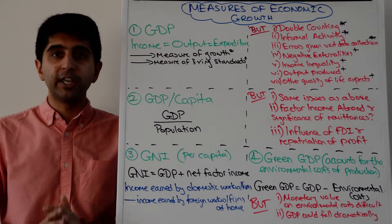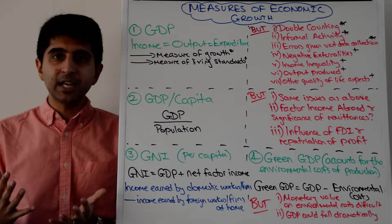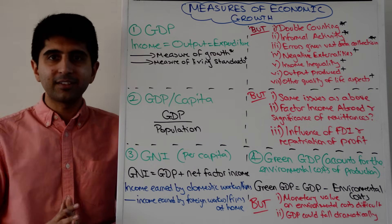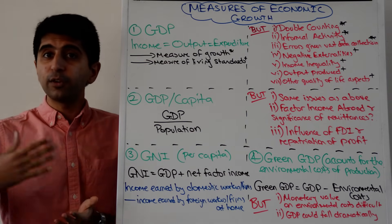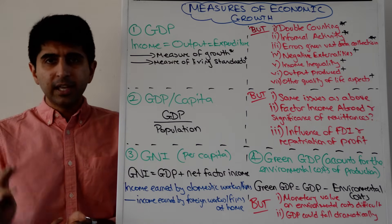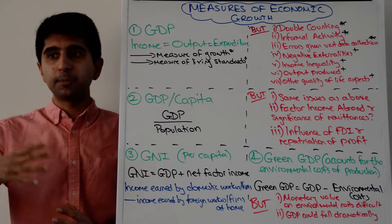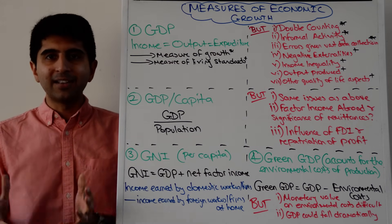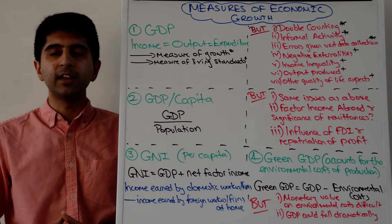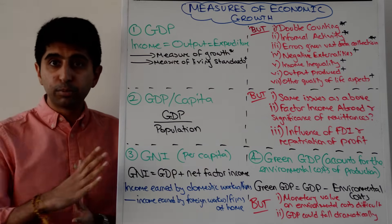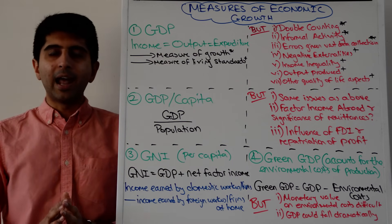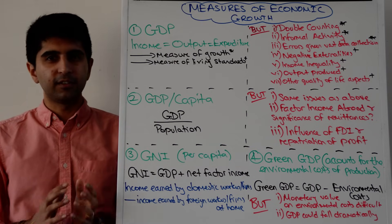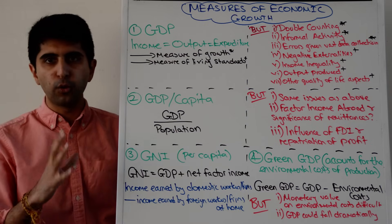National income statistics, as a measure of economic growth, also allow governments to see whether they are meeting their objective of economic growth. It allows government to evaluate policy — whether policy in the past has been successful in increasing economic growth, and policy going forward to increase economic growth. It allows governments, economists, and businesses to forecast expected demand and expected growth going forward, which is very important. National income statistics can also act as an important measure of living standards, for governments to evaluate current living standards and whether they have been improving over time. And they allow for a comparison of the performance of an economy compared to other economies in the world.